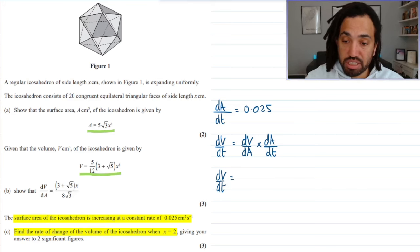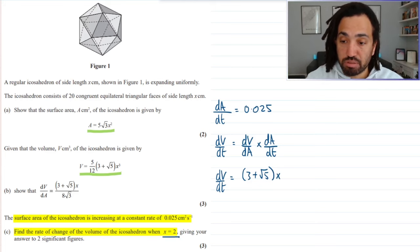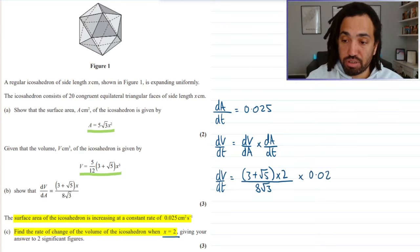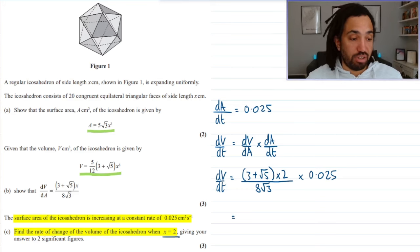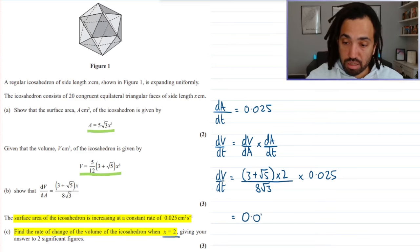So, what that means is, is I just need to sub in, well, I already have that dV by dA, like that, but we're asking to find out the value when x is 2, so I can change the x to a 2 there, and that's all over 8 root 3, and then that's multiplied by 0.025. Okay, so there we go, I can put that into my calculator, and I get a value of 0.019, and that will be metres, or centimetres, sorry, cubed per second.